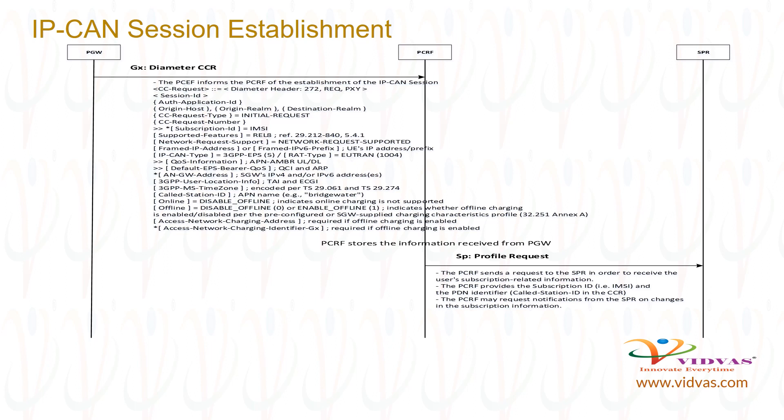Assume UE attach is in progress. The IP connection establishment procedure is triggered by PGW when PGW receives a create session request from SGW during the UE attach procedure in LTE.